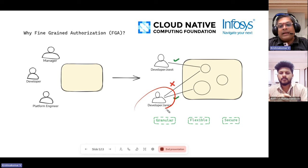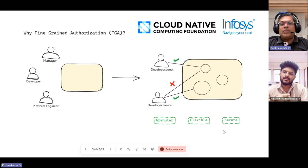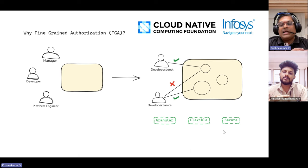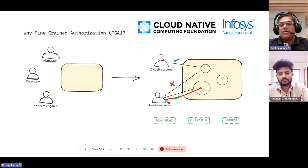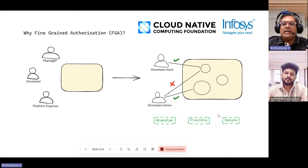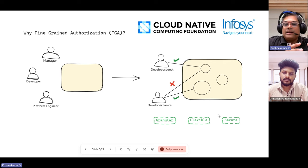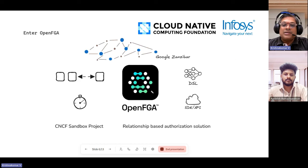With fine-grained authorization the advantage is that the authorization decision is taken with a lot more data — including what the resources are, what the role of the developer is, and what the relationship of the developer is with the resources. In this way the authorization decision is taken with a richer set of data, within the authorization platform itself.